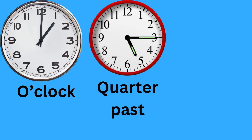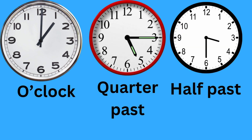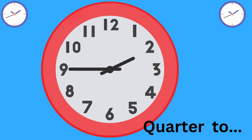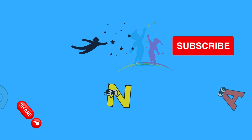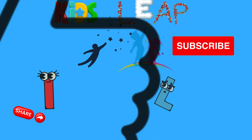To recap: when the long hand is at twelve, we say it's o'clock. When at three, we say quarter past. At six, we say it is half past. Finally, when at nine, we say quarter to. I hope this helps you to learn how to tell the time correctly. Thank you for learning with me.